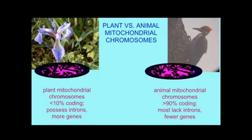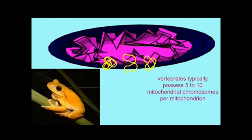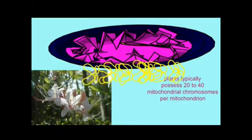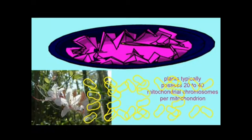With these more nucleotides, not only are there more genes, but also more sequences which are not genes, such as introns and sections which are non-coding. In addition, plant cells can have multiple mitochondrial chromosomes per mitochondria, even 20 to 40.